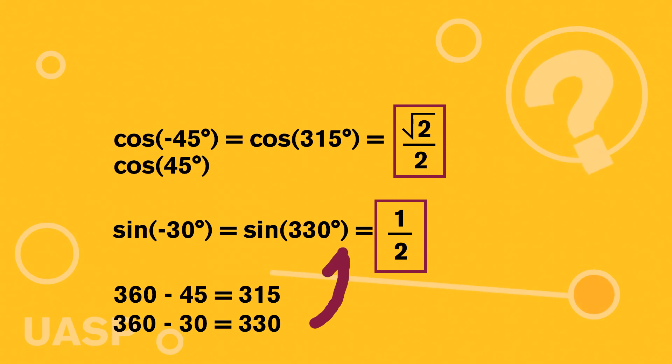It's still going to be the same process though, of like whenever we have cosine, we take the x coordinate. Whenever we have sine, we take the y. That all remains consistent. It's just the direction you go on the unit circle.